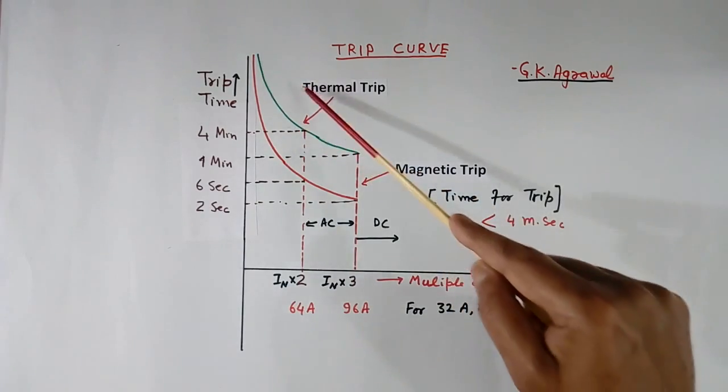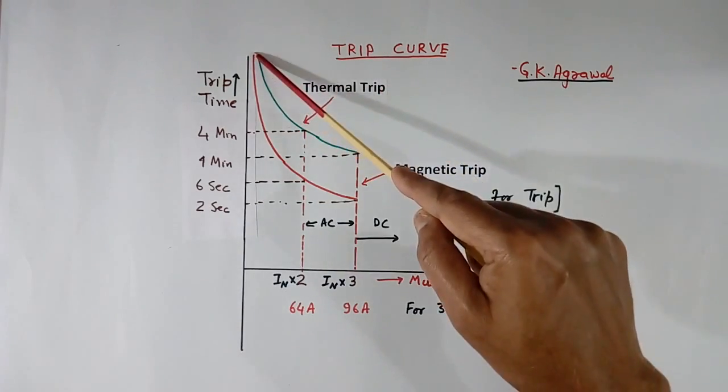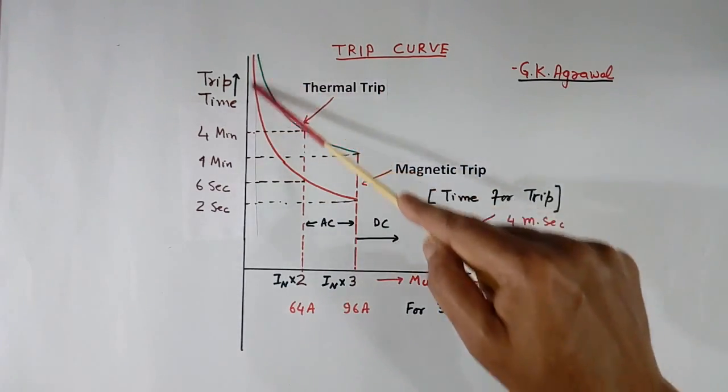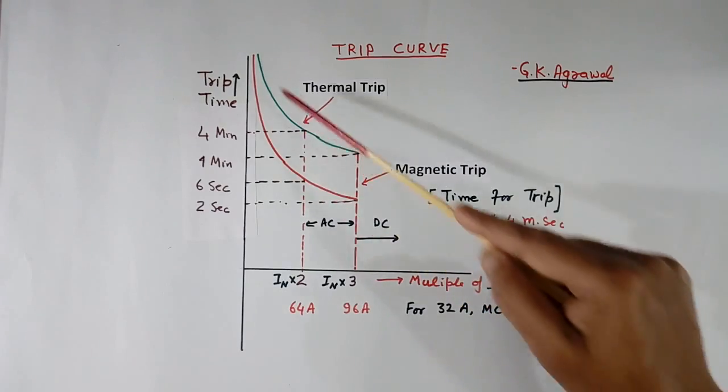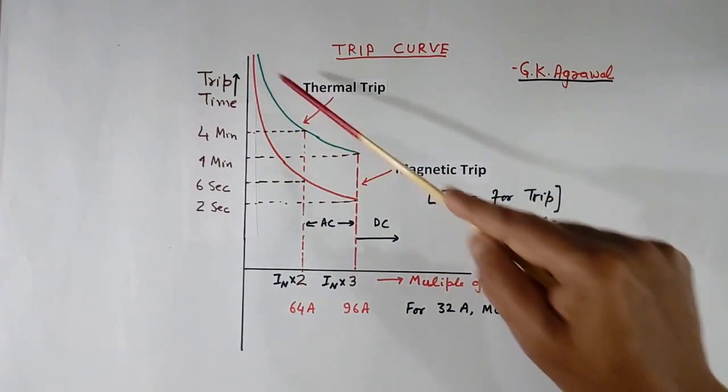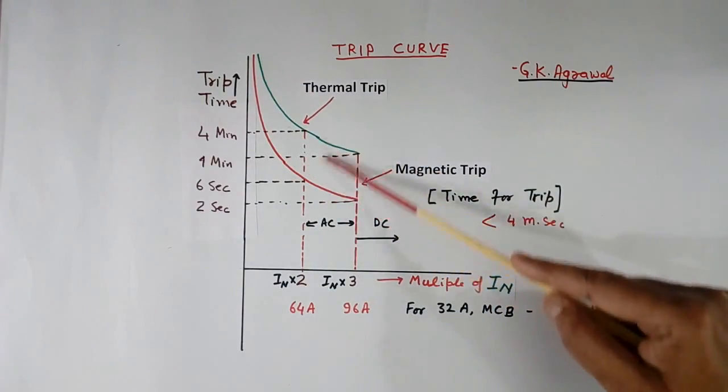Now this plot is thermal trip. This can be here, this can be here. Two ranges I have shown. These are ranges. This plot can be anywhere. It may be like this, it may be like this. A lot of variation will be there.